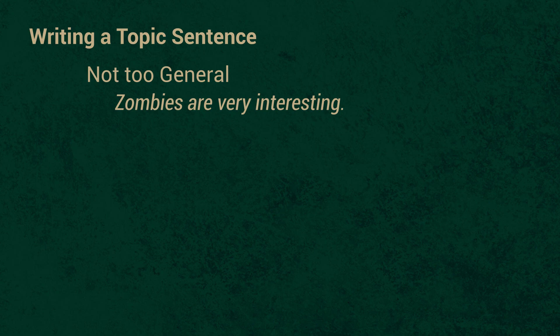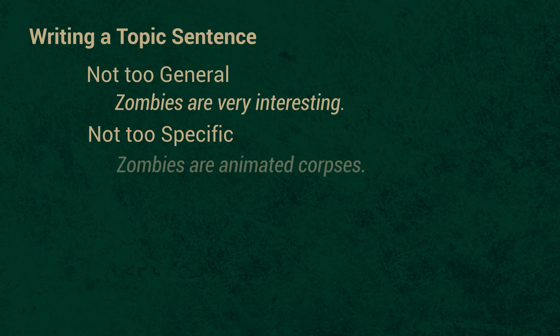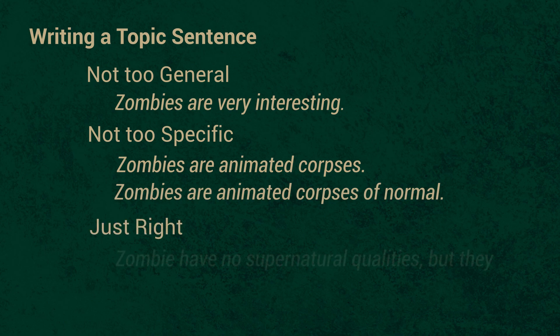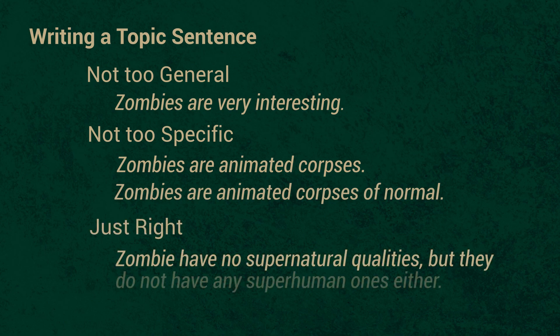So don't be too general, but neither should you be too short, too narrow, or too specific. If you are, your paragraph won't advance your argument. A topic sentence that is too specific is basically just a statement — it doesn't require any support. The right balance is just right, for example: 'The zombie has no supernatural qualities but it doesn't have any superhuman ones either.' Once you've decided on your topic sentence, make sure that your paragraph stays on topic.